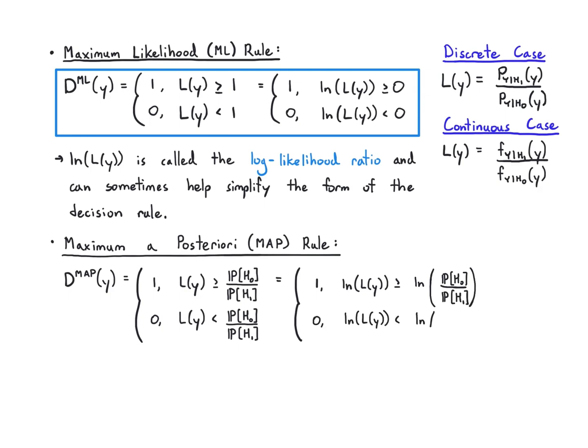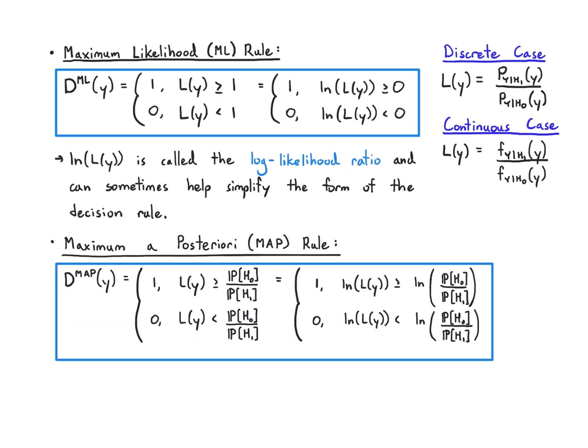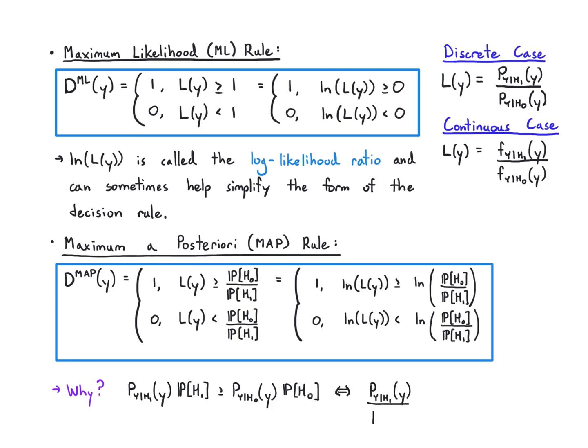If you expand this out, you can convince yourself that what's happening is: if I take the likelihood ratio and multiply both sides by P of Y given H0, that goes to P of H0, and if you multiply both sides by P of H1, then P of Y given H1 gets P of H1. So this is basically the MAP rule in the discrete case, and that's the same as just dividing things on either side.